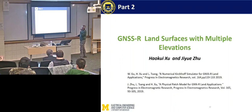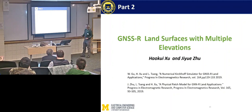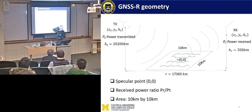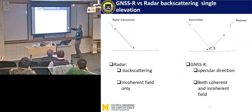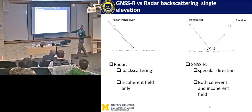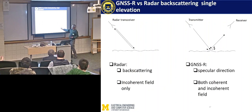The second subject is GNSS-R land surfaces with multiple elevations. I'll quickly go through what we do in terms of electromagnetics. The GNSS-R geometry uses the GPS satellite as a transmitter. There is a specular point and you calculate the power-receive ratio. Our simulations assume a 10 kilometer by 10 kilometer area. This is a rough surface scattering problem. In traditional radar you have just backscattering — only the incoherent field. But in GNSS-R you have a transmitter and specular reflection, so you have both coherent and incoherent fields.